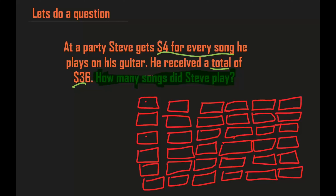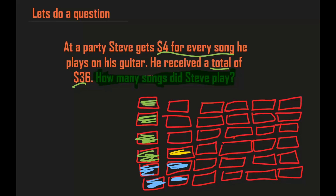Now we know he got $4 for every song he played, so we're going to divide these into sets of four each. I'm going to use different colors to represent that. The first set is green: 1, 2, 3, 4. Then blue: 1, 2, 3, 4. Then yellow: 1, 2, 3, 4.